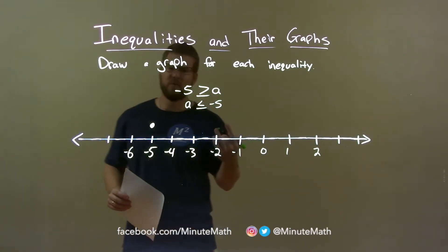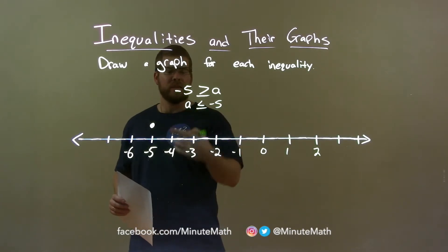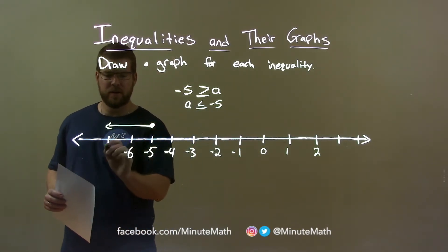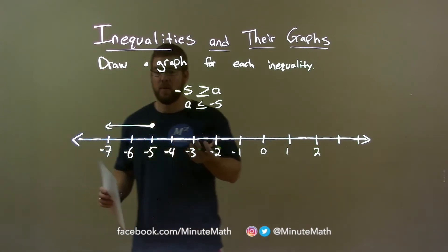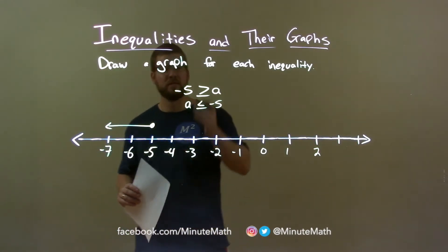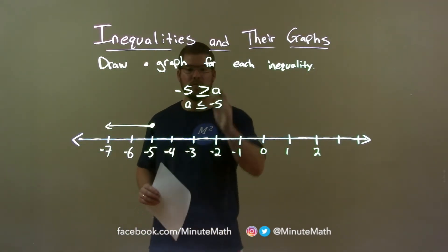From there, a is less than, so we have the shade to the left here and put a negative 7 there, and there we have it. We have our graph that represents negative 5 is greater than or equal to a.